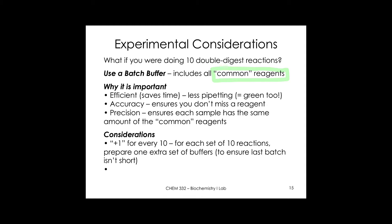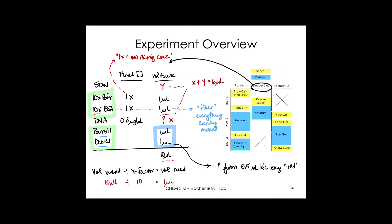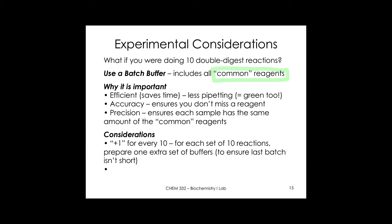The plus-one rule: for every 10 reactions, prepare one extra set of buffers. This ensures the last tube receives the full 4 µL of batch buffer and doesn't come up short. We waste a small amount to guarantee every sample is precisely the same.